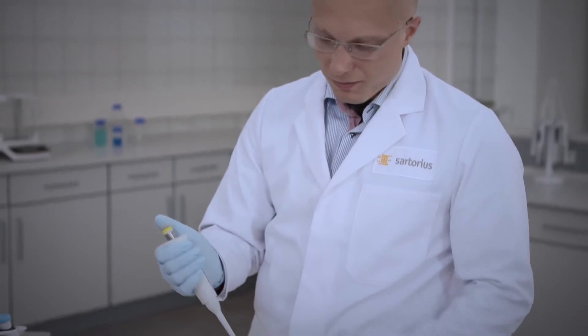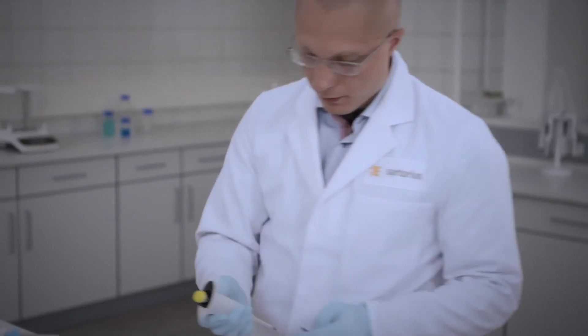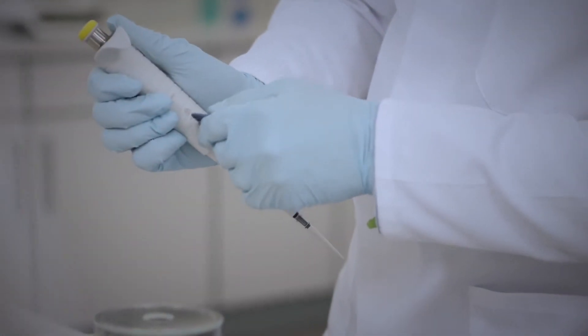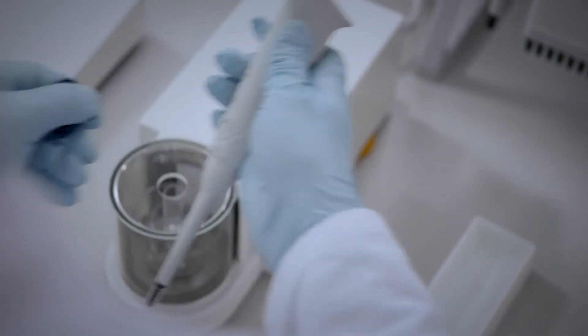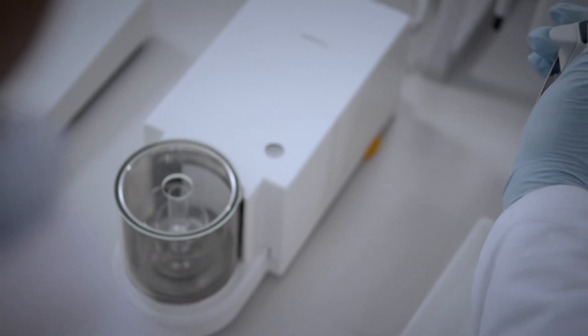Pipettes can often be adjusted to correct for accuracy using special calibration tools. A turn clockwise will increase the dispensed volume while a turn counterclockwise decreases the volume.